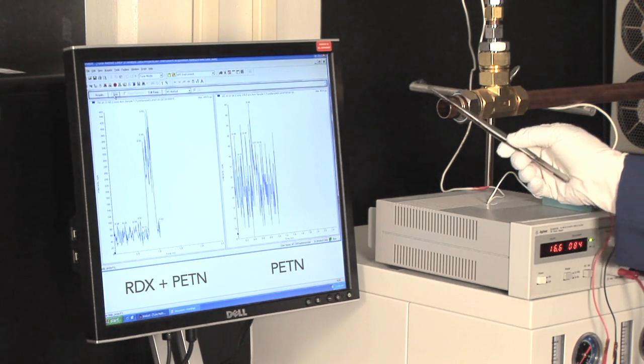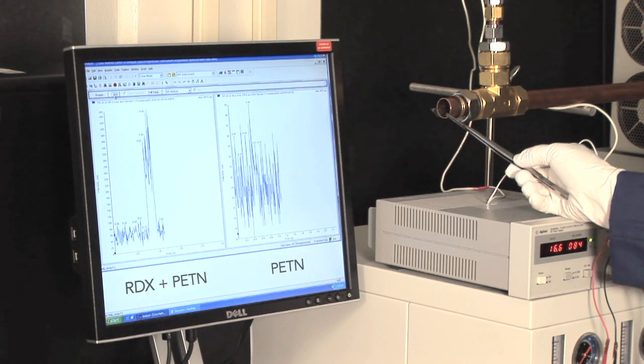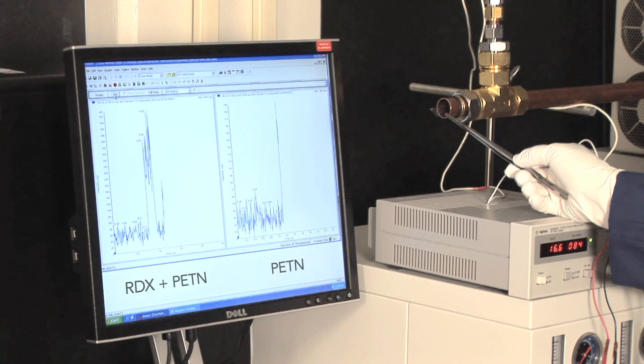This is another glass microscope slide, now with the residue of PETN on the surface. When we sample the vapor from the PETN slide, we see a response for the PETN on the right side of the screen.